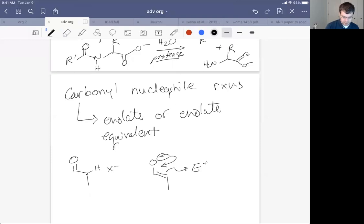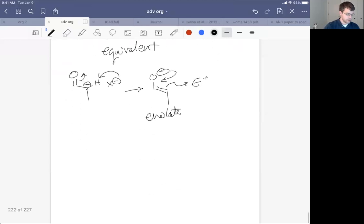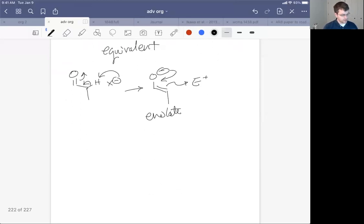So we could have some base grabbing the alpha position of a carbonyl and pushing the electrons through to give rise to an enolate structure. These are really important reactions in biological processes. And they do two types of reactions: for the most part, they do the aldol reaction and a Claisen condensation.